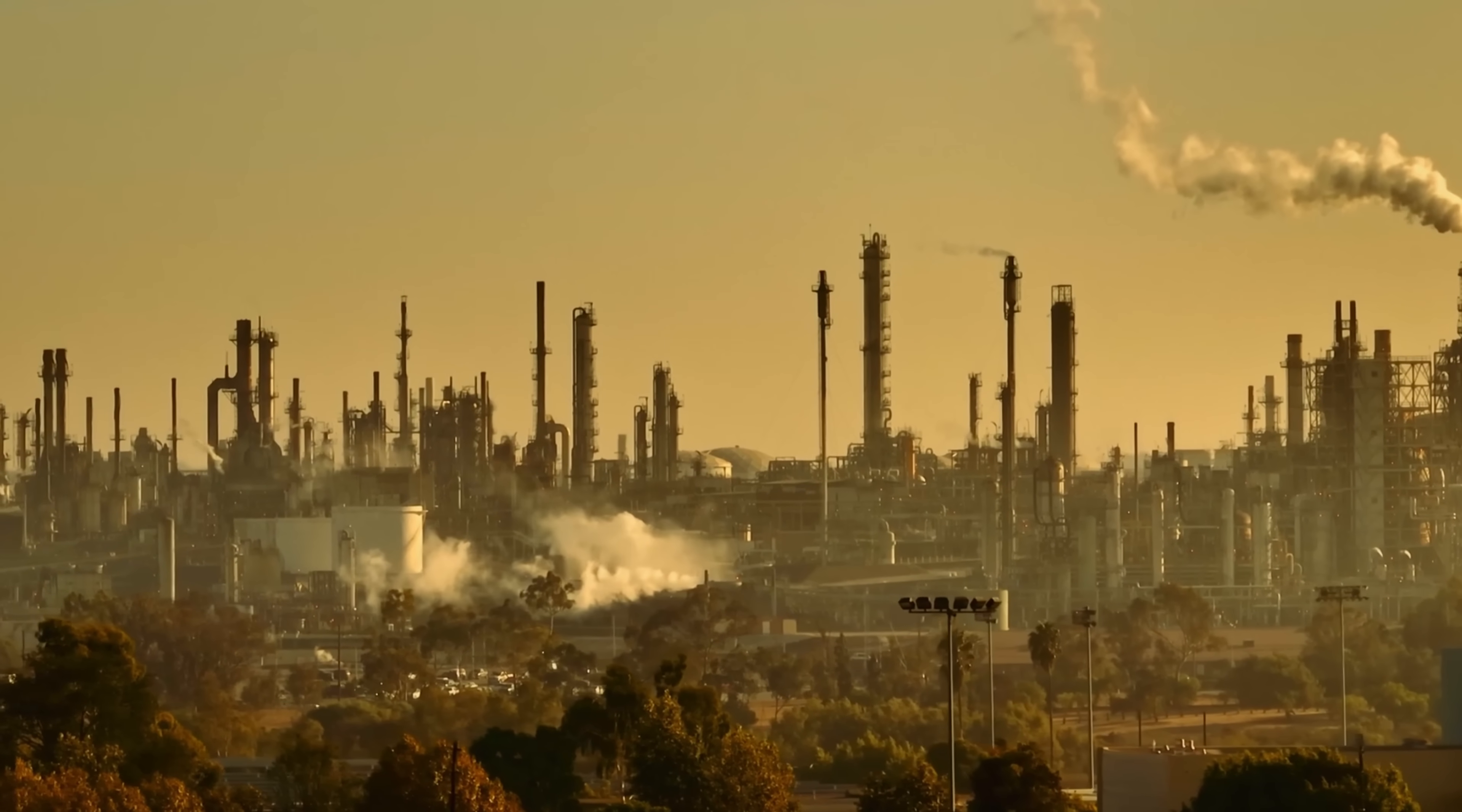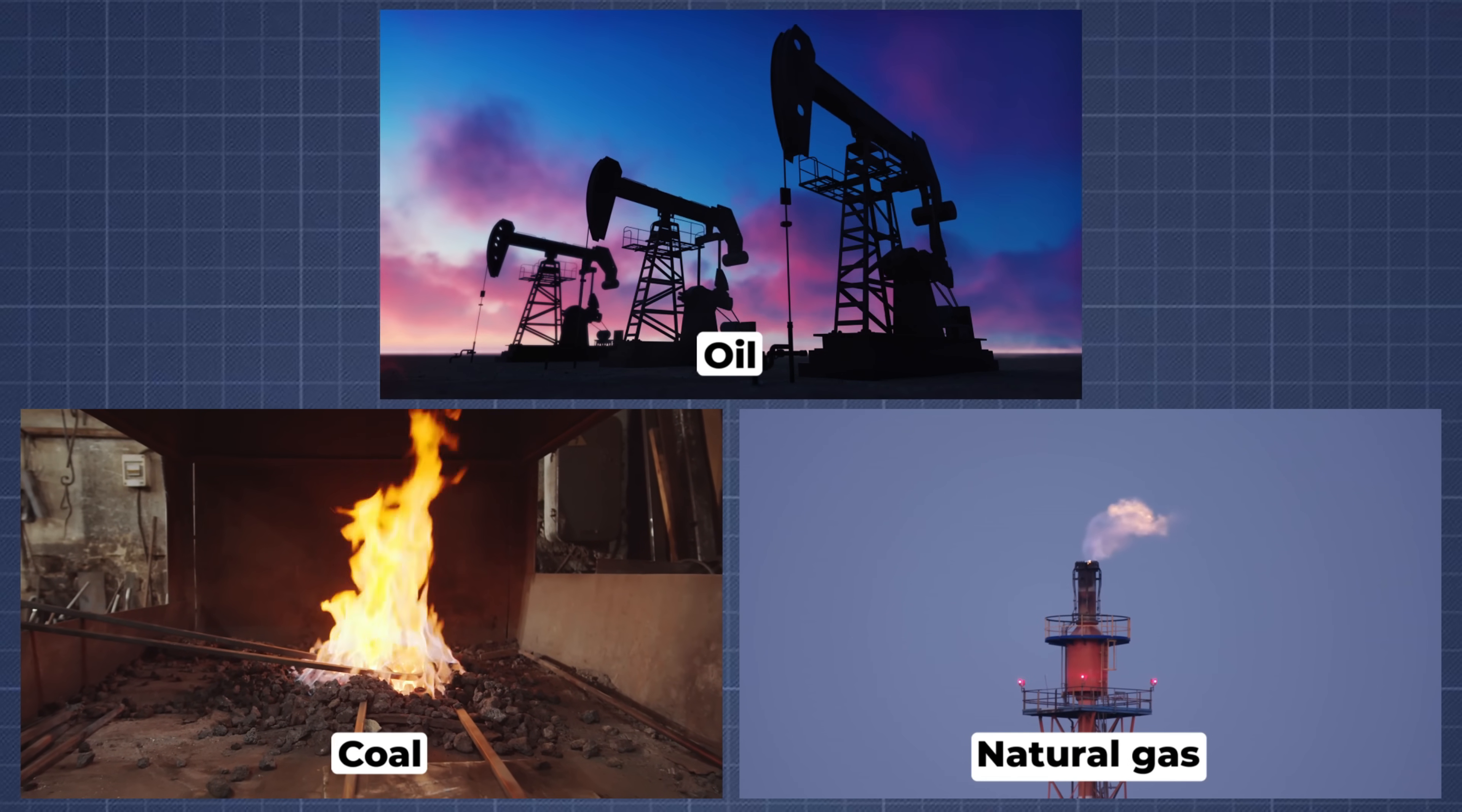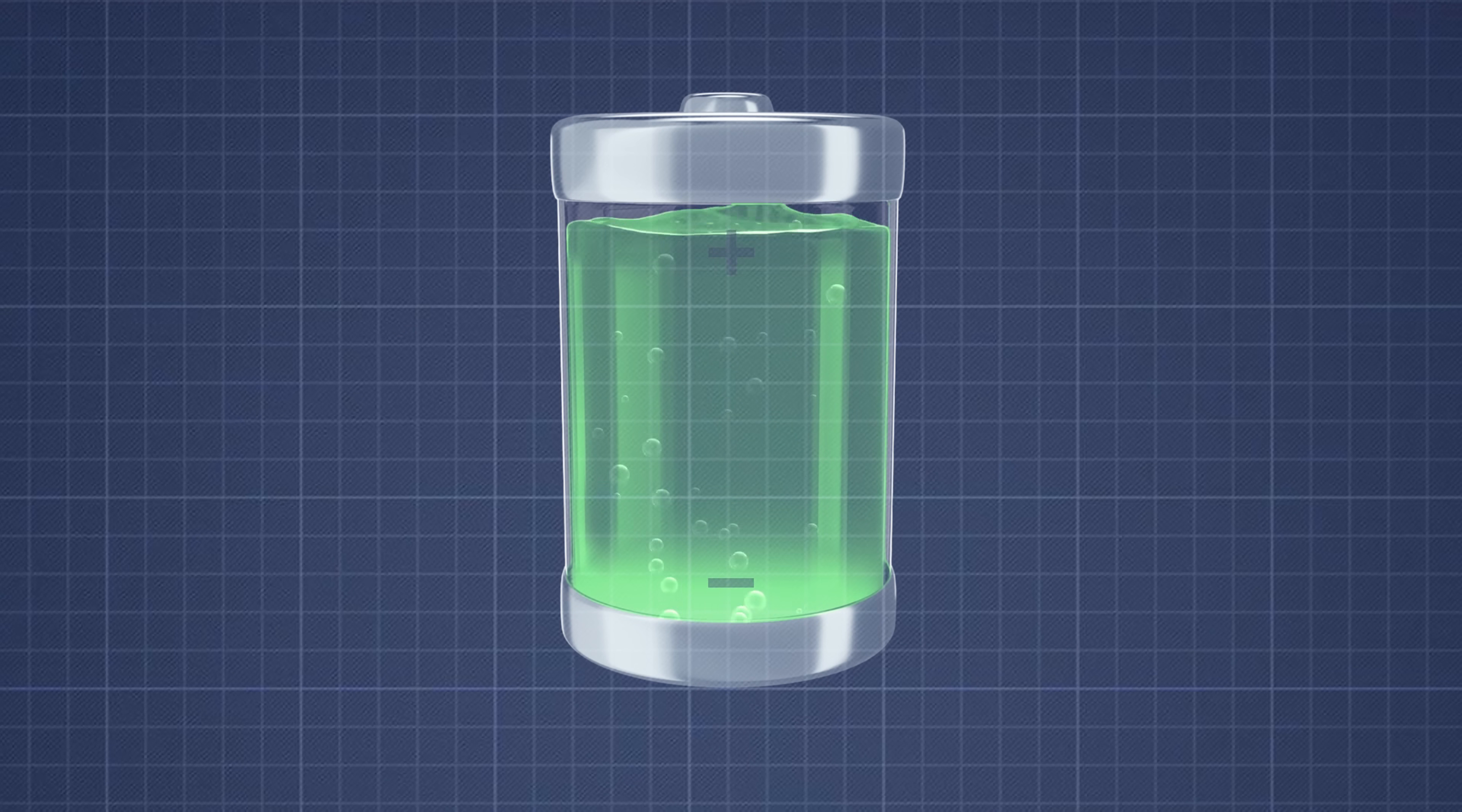Right now, the world runs on fuels that pollute the air, warm the planet, and rely on unstable supply chains. Natural gas, coal, oil – we burn through billions of tons every year. And while solar and wind are growing fast, they depend on the weather. Battery storage helps, but it's expensive and limited.